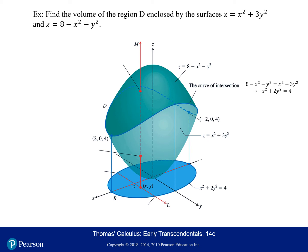The projection — the shadow down into the XY plane — is an ellipse with the same equation. The surfaces intersect at the points (negative 2, 0, 4) and (2, 0, 4), found by plugging in Y equals 0 and solving for X. For the Z limits of integration, a line parallel to the Z axis enters the region at the bottom surface X squared plus 3Y squared and exits through the top surface 8 minus X squared minus Y squared.